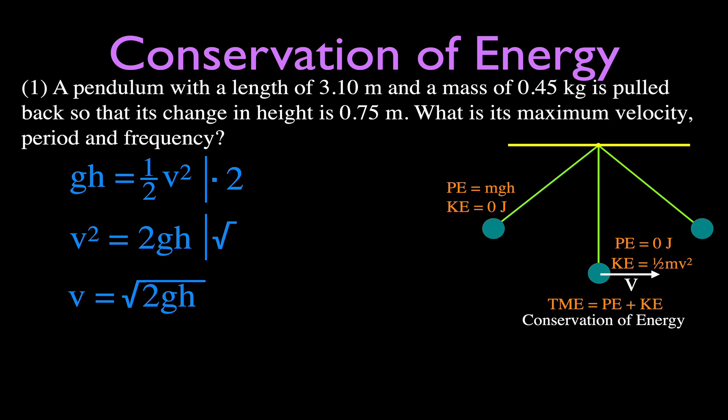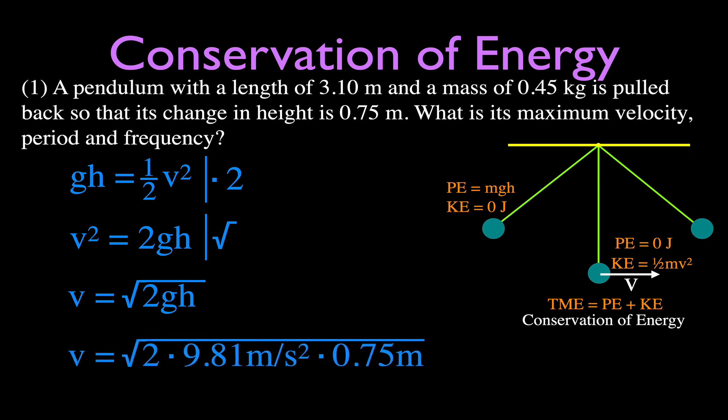Plugging in the values: 2 times G (9.81 m/s²) times the change in height of 0.75 meters. The maximum velocity as the pendulum swings through its equilibrium position is 3.84 meters per second.